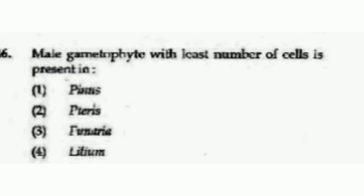The male gametophyte with the least number of cells is found in — options are Pinus, Pteris, Funaria, or Lilium. The right answer is option number 4, Lilium.